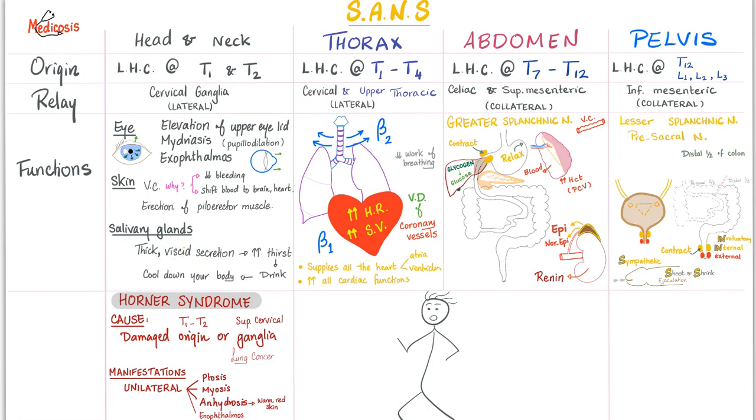Salivary glands. Sympathetic will help you secrete thick viscous secretion. Is this for digestion? Shut up. Who cares about digestion right now? This is to make you thirsty. Oh, it's very thick. Salivary. I need to drink. Why drink? To replenish your body with water. To treat your dehydration. And to cool down your body after running from a tiger. Also, to maintain a robust blood pressure.